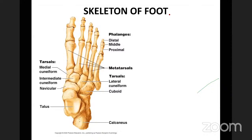Now we will discuss the skeleton of the foot. The talus and calcaneum are in the proximal row. The navicular is in the middle row. In the distal row, laterally is the cuboid, and medially are the three cuneiform bones: medial, intermediate, and lateral cuneiform. Then come the five metatarsal bones and the phalanges.